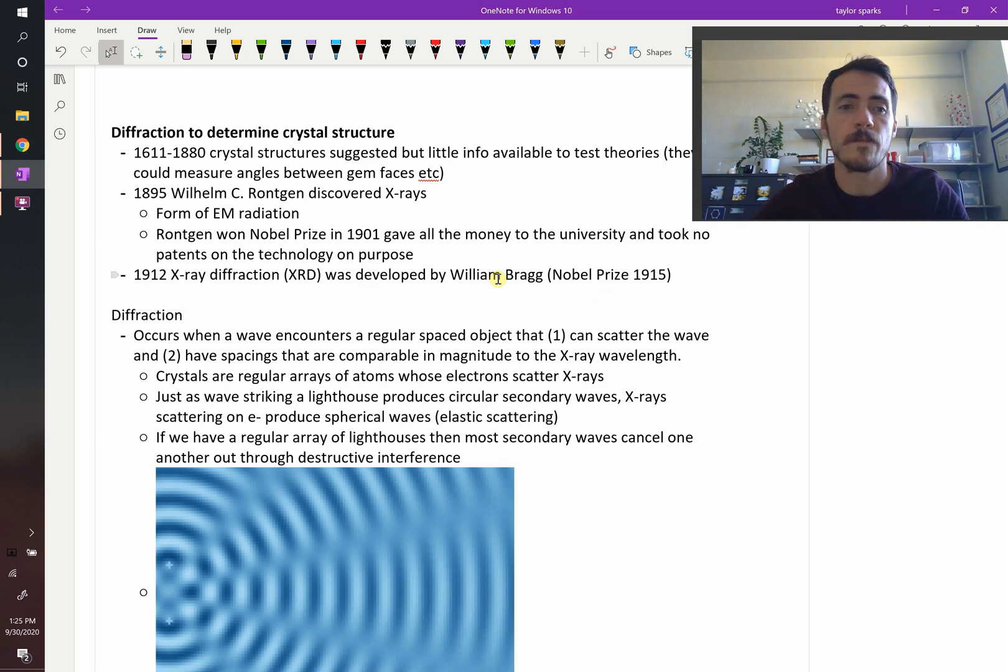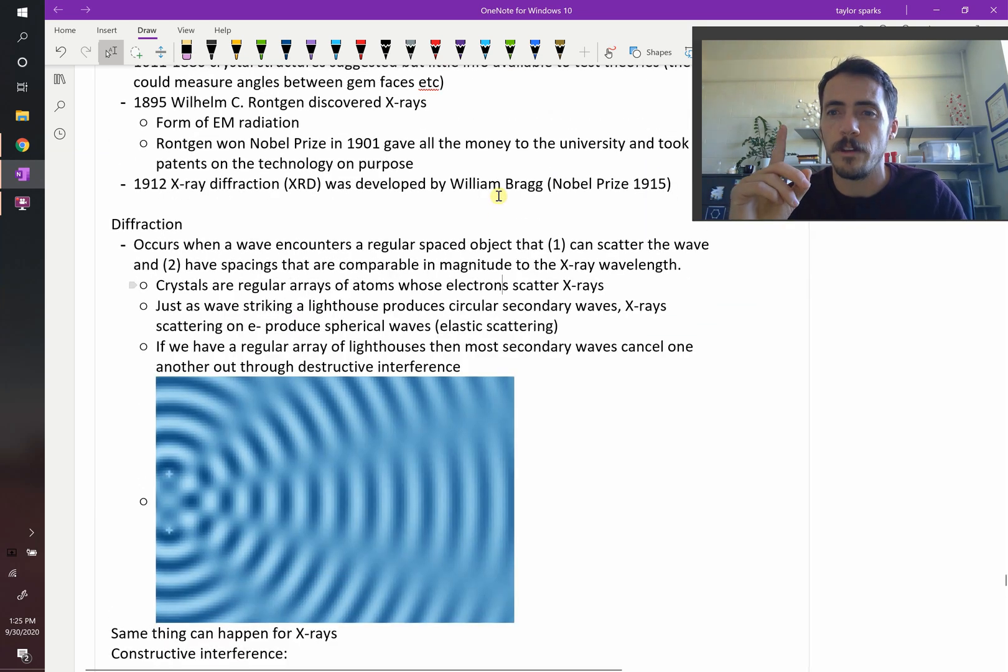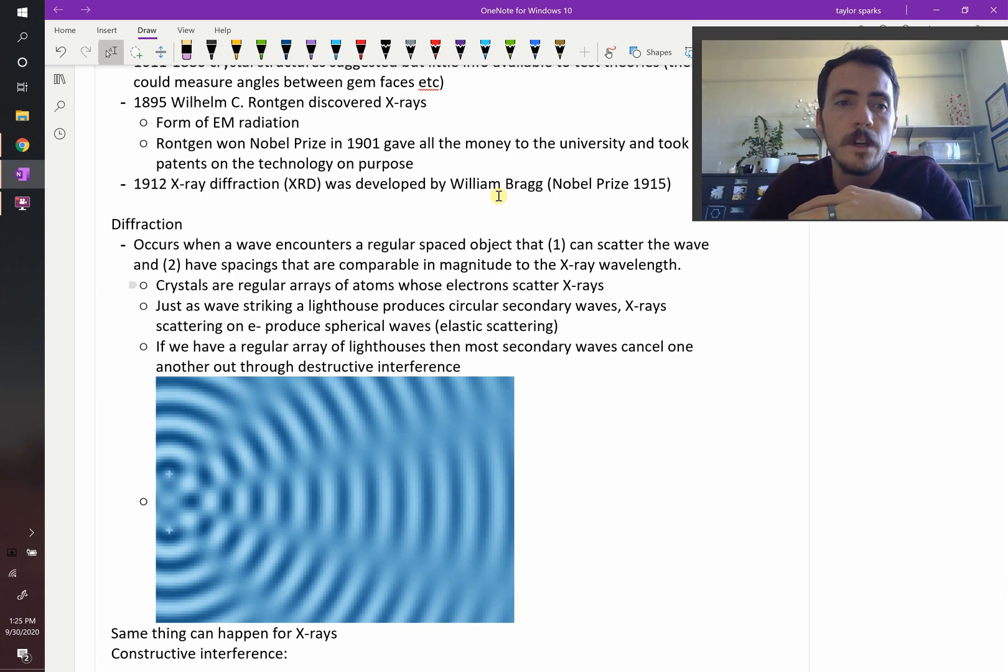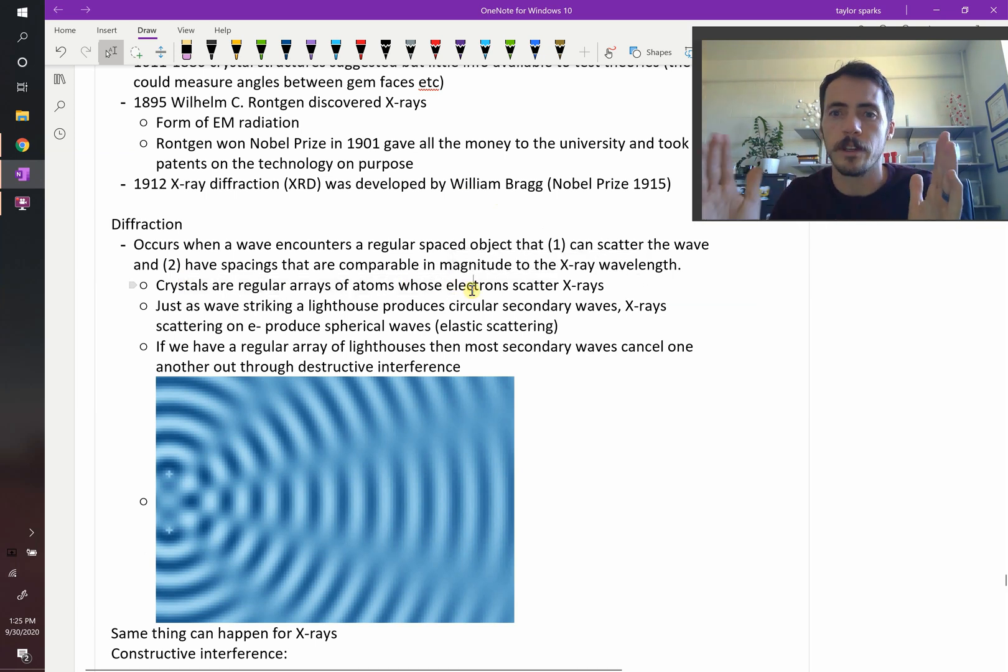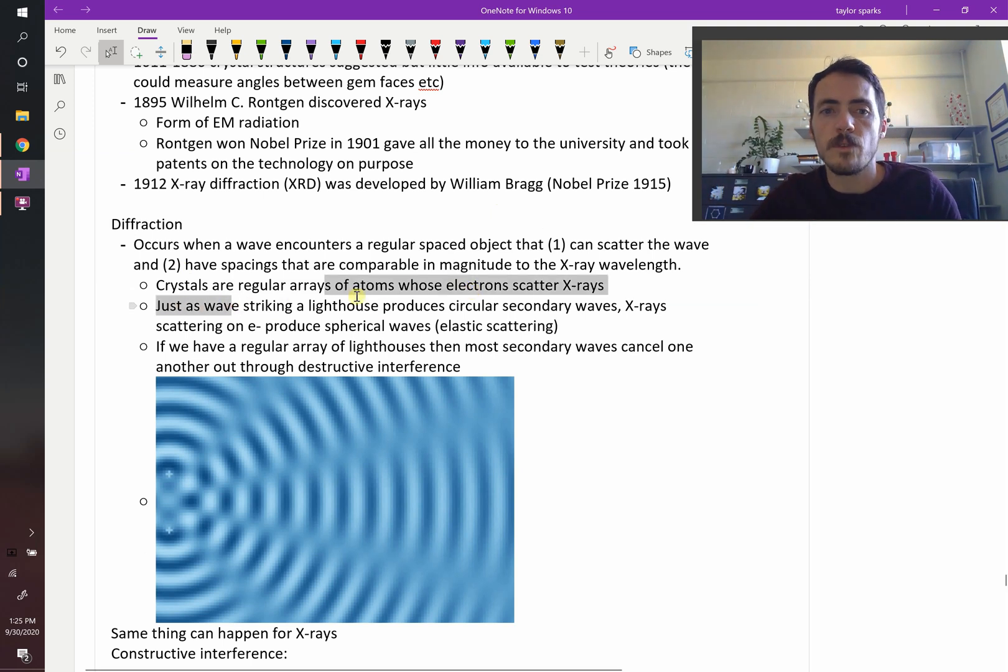Here's how it works. Before we dive into how it interacts with matter, let's just think broadly about how diffraction occurs. So diffraction occurs when a wave encounters a regularly spaced object that one, can scatter the wave, so it has to be something that can scatter the wave. And two, it has spacings comparable to the magnitude of the x-ray wavelength. Think of it like this. Crystals have a regular arrangement of atoms. It's periodic. So check that box off.